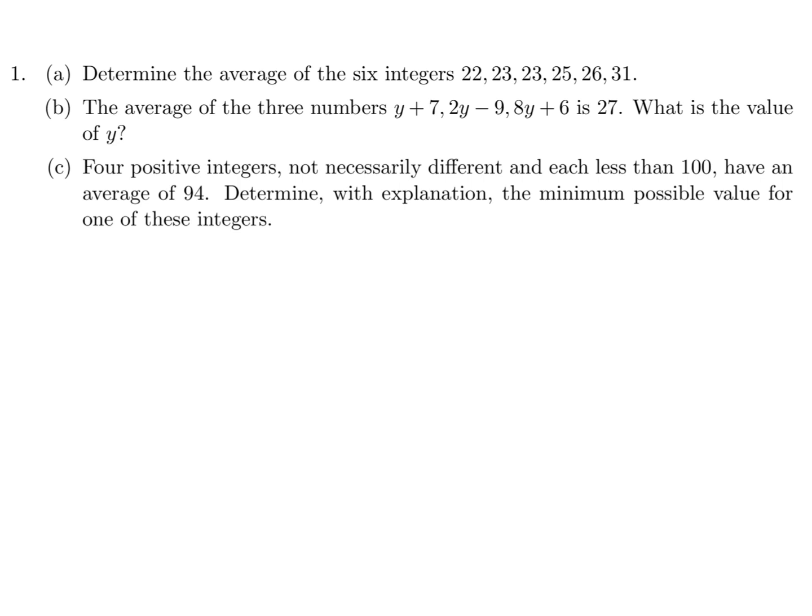Determine the average of the six integers. Well, you add them up: 22 plus 23 plus 23 plus 25 plus 26 plus 31. Divide by how many there are, which is 6. And that would be the calculation, which in this case is 150 over 6, which is equal to 25.